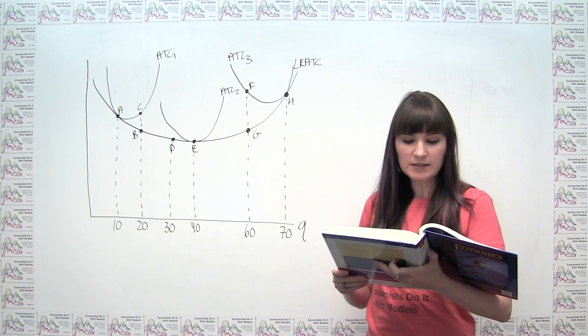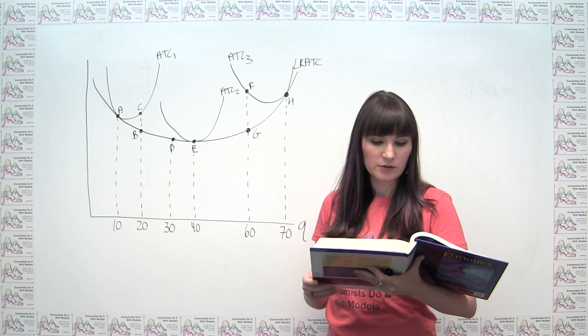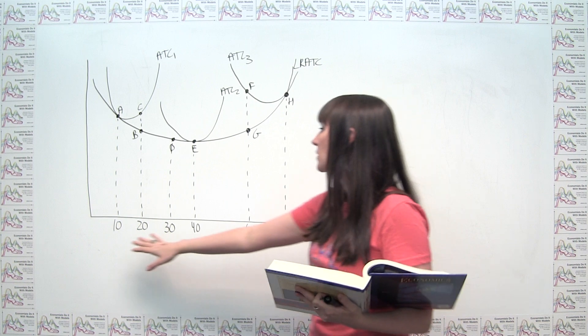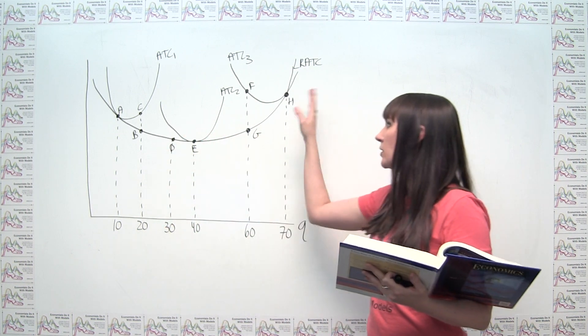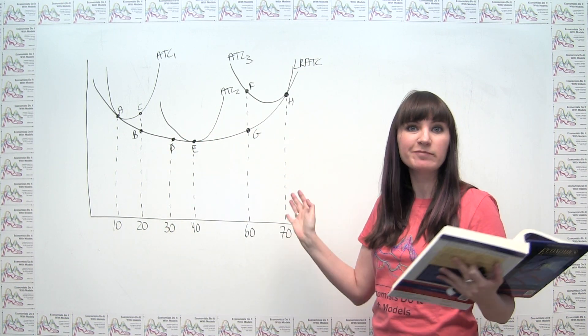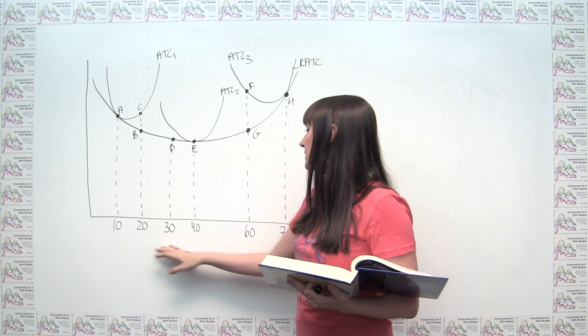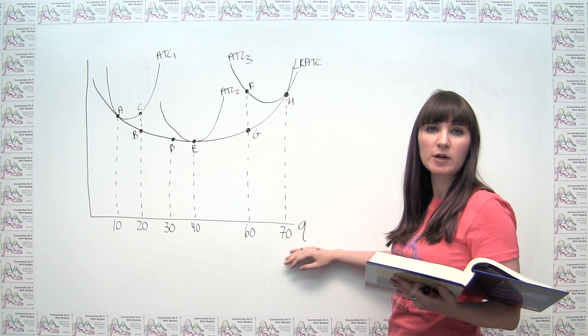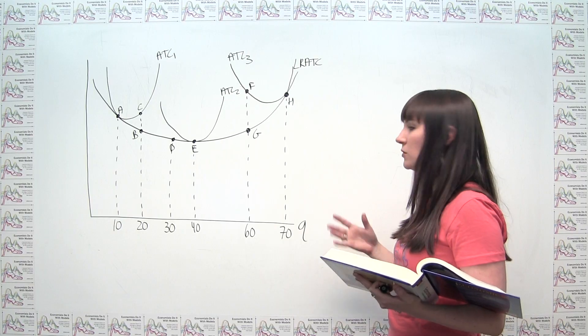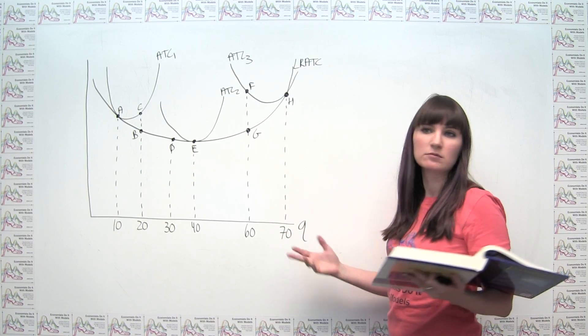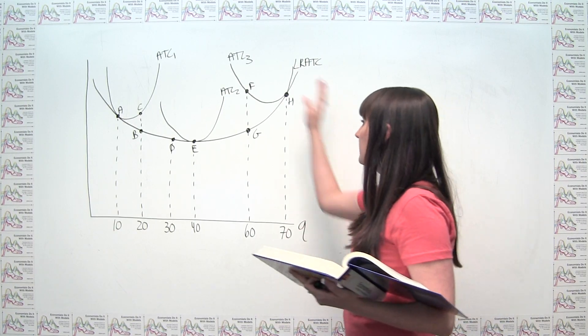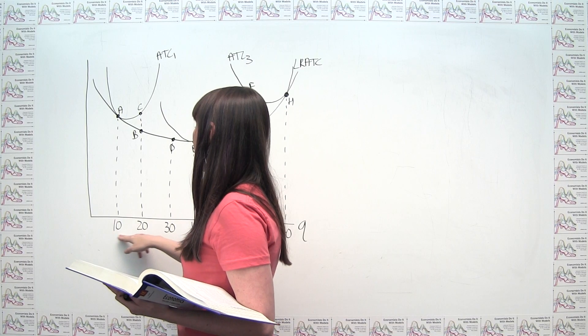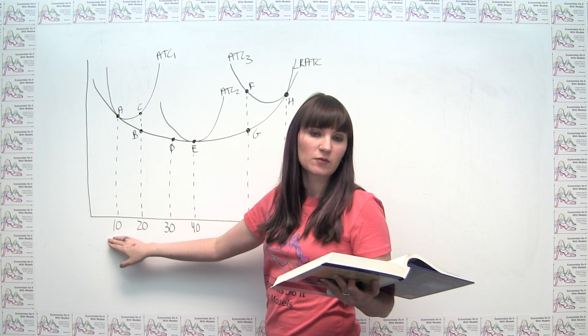Our problem says, Ludmilla's house of schnitzel is currently producing 10 schnitzel a day at point A in the following diagram. So what you notice is this is the diagram that you're given. The only main difference is, I always label this as a small q if we're talking about individual firm production, just to distinguish it from the capital Q of market production. We can see that point A is in fact at a level of 10 schnitzels of production.